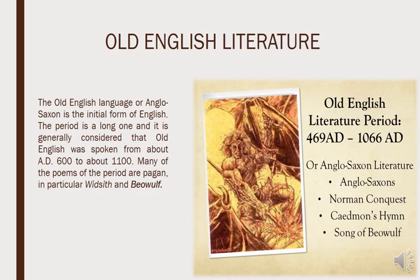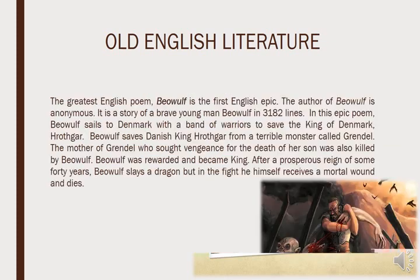The Old English language, or Anglo-Saxon, is the initial form of English. The writing and transcript of the English language evolved from the Angles and Saxons when they came to England. The period is a long one and it is generally considered that Old English was spoken from about 600 AD to 1100 AD. Many of the poems of the period are pagan, in particular Widsith and Beowulf. This period included Anglo-Saxon literature, the Norman Conquest, Caedmon's Hymns, the Song of Beowulf, and many other smaller documented works.